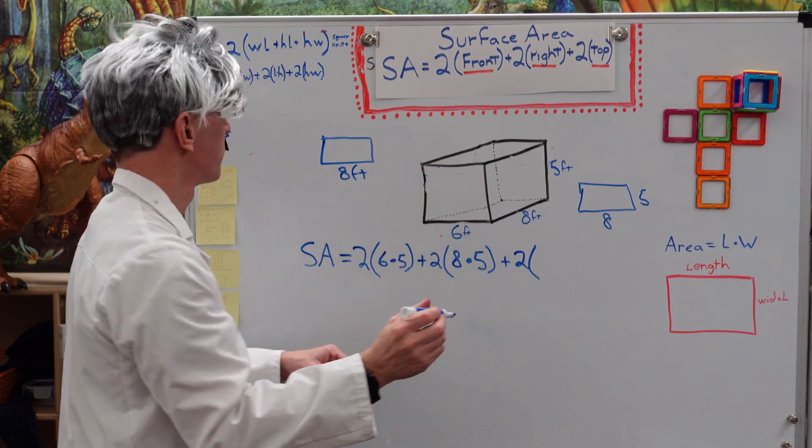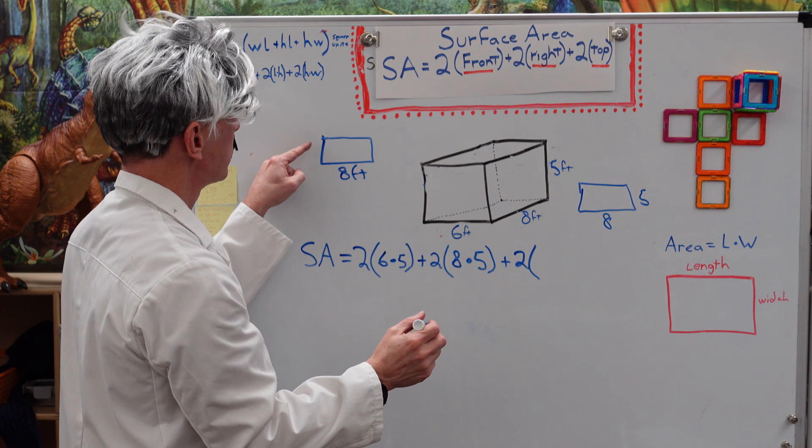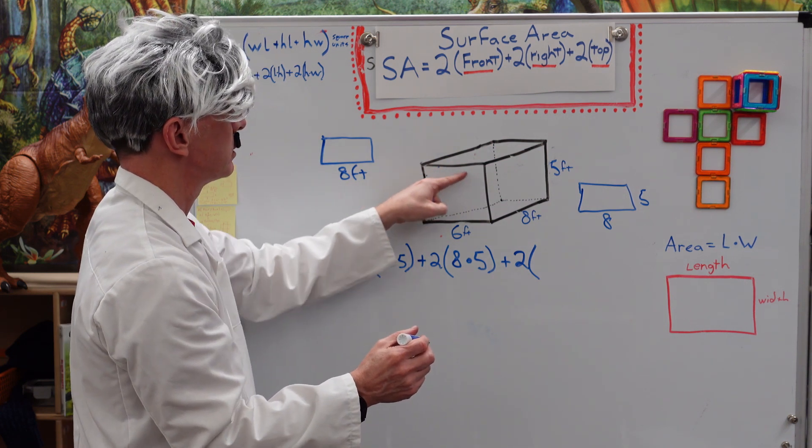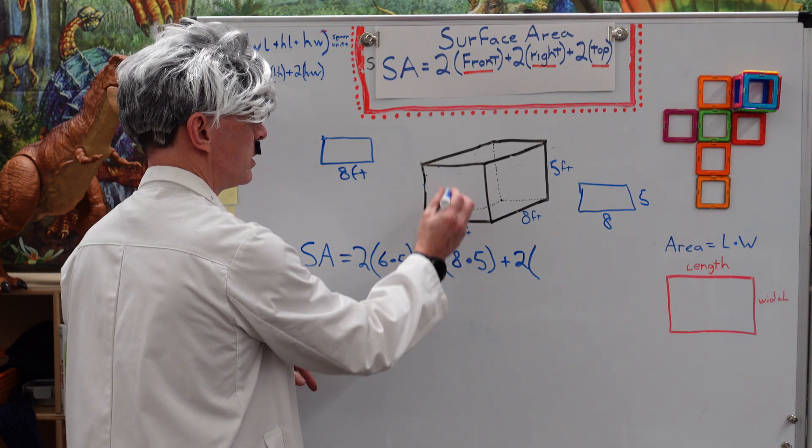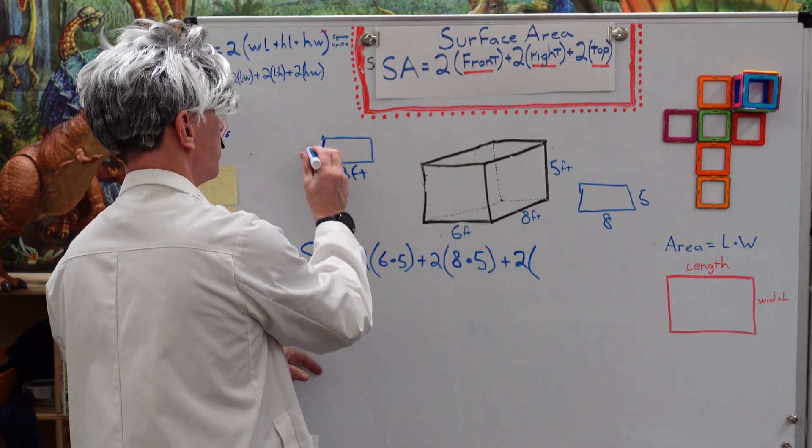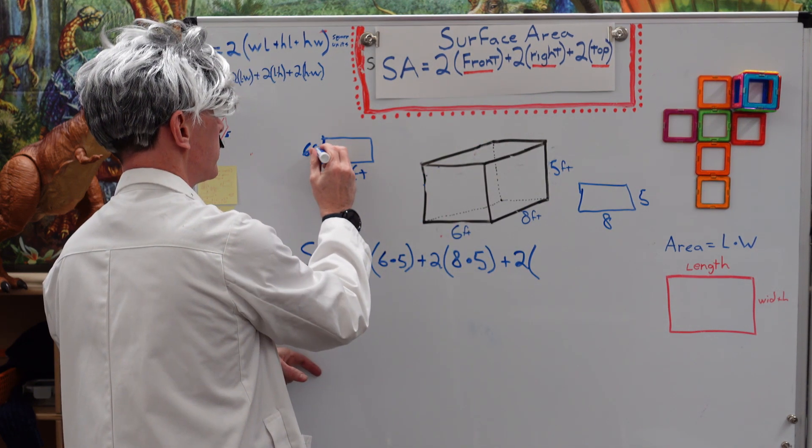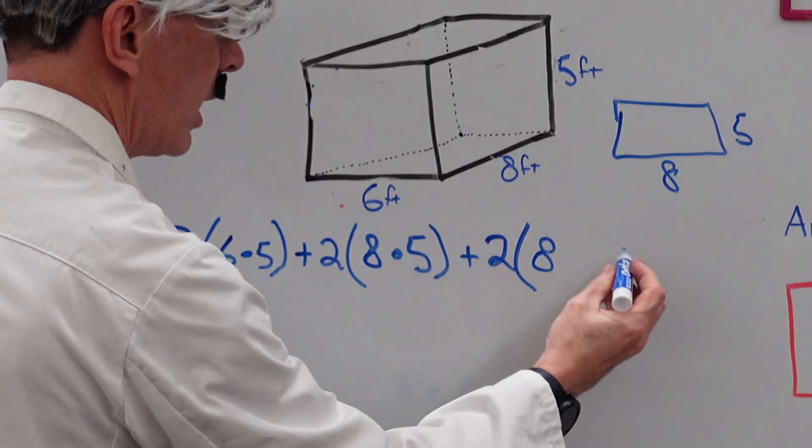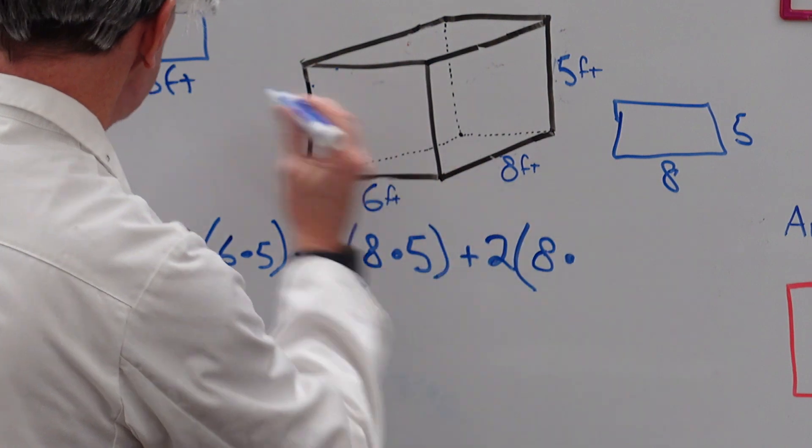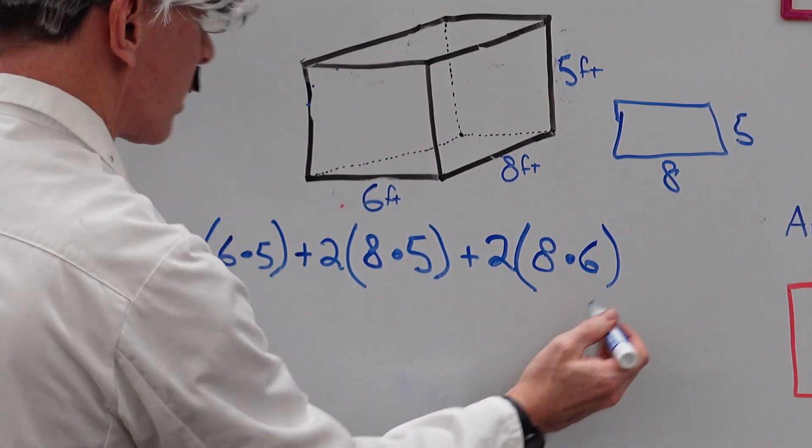Now, we need to figure out this one right here. This is the same size as this line segment here. 6 feet, 6 feet, 6 feet. So, I put 6 feet right there. So, we go ahead and put the area here. This will be 8 times 6. Very good.